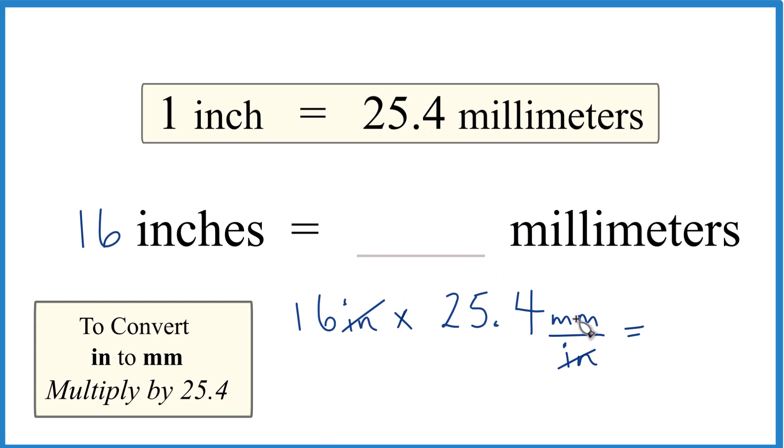16 times 25.4 millimeters equals 406.4 millimeters. So if we convert 16 inches to millimeters, we get 406.4 millimeters.